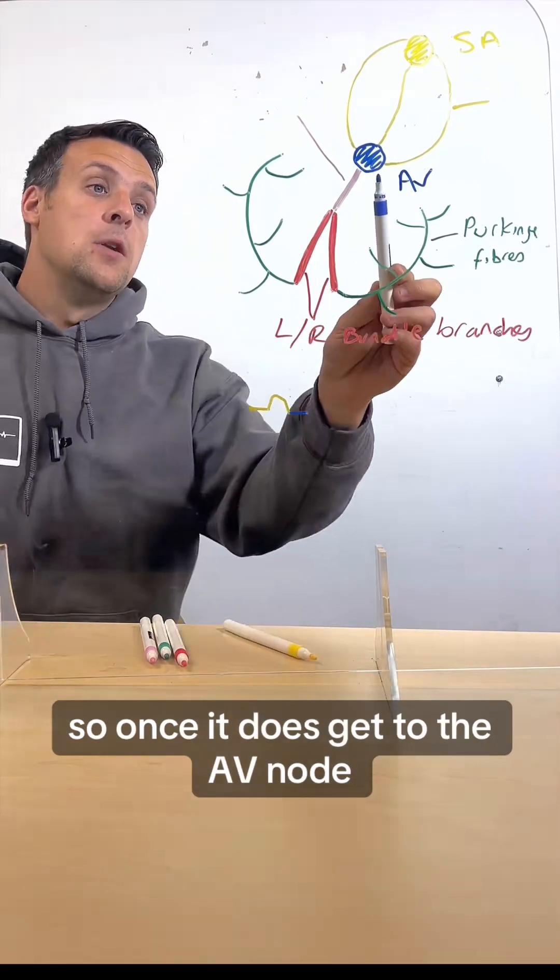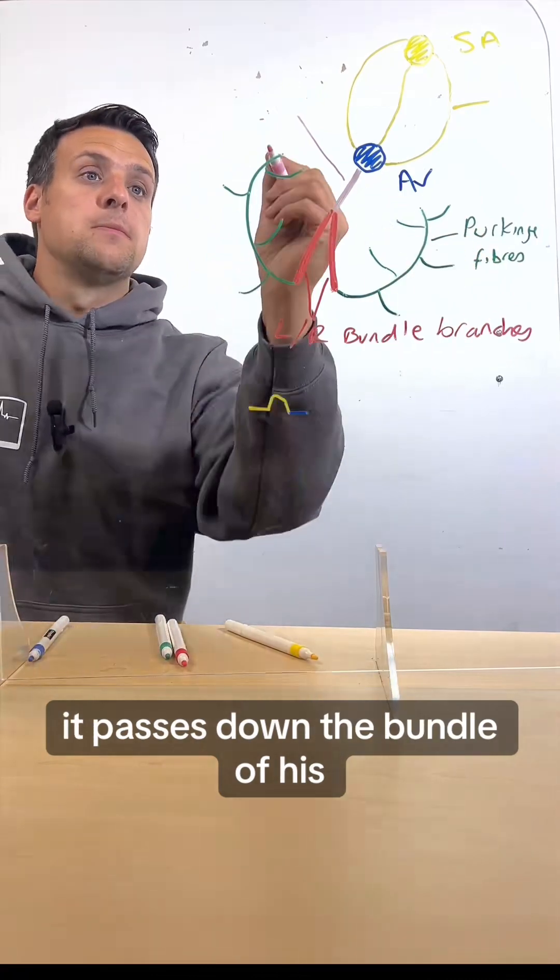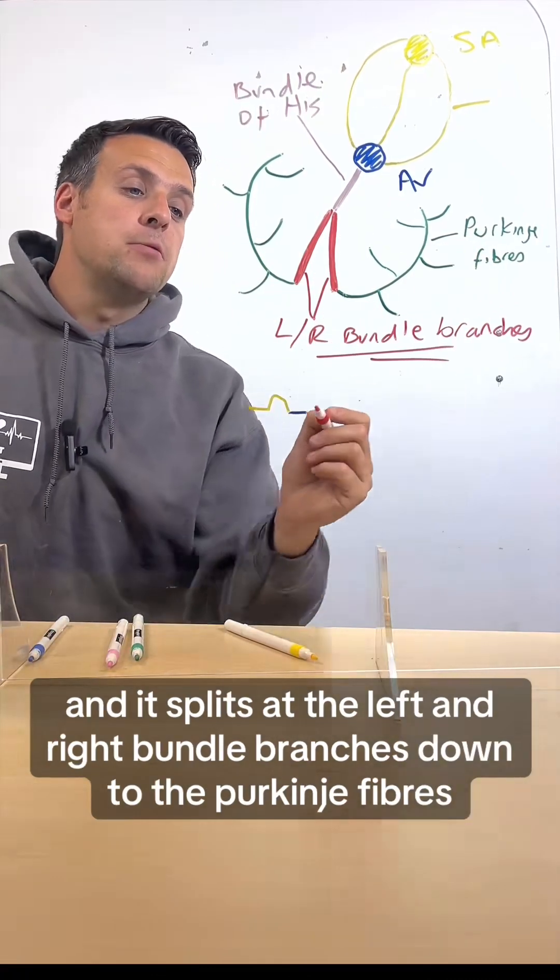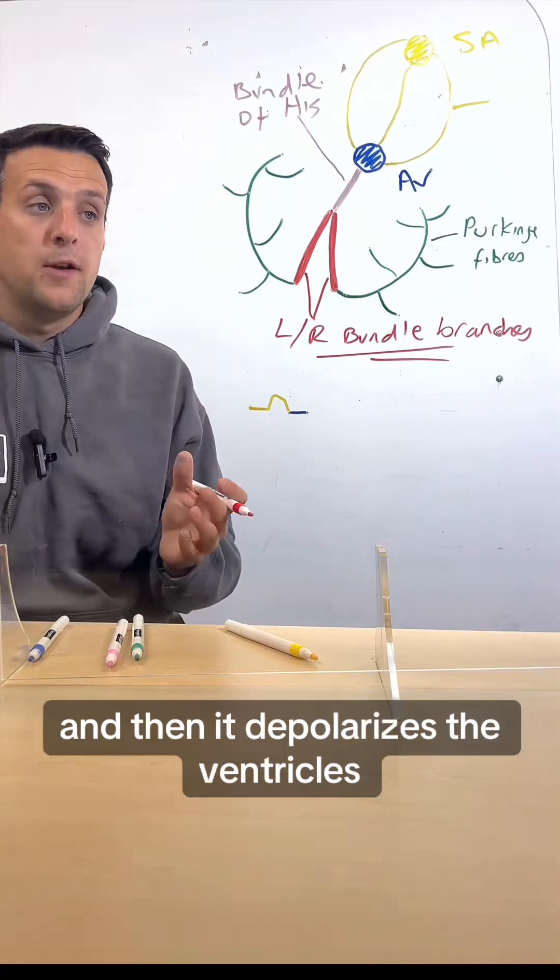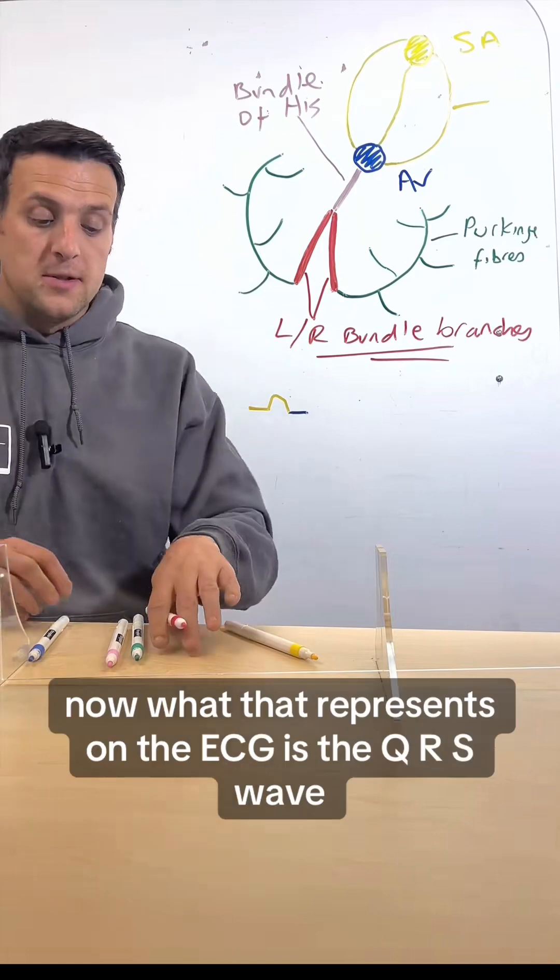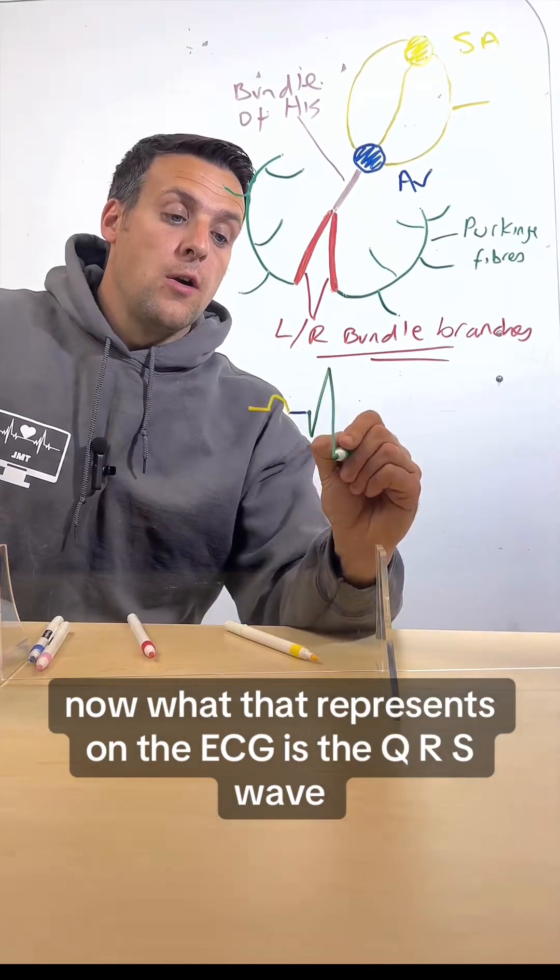Once it does get to the AV node it passes down the bundle of His and it splits at the left and right bundle branches down to the Purkinje fibers and then it depolarizes the ventricles. That represents on the ECG the QRS wave.